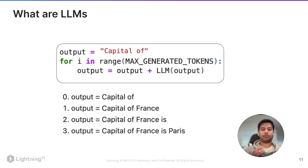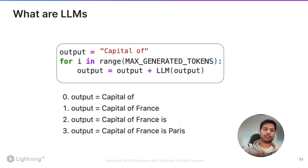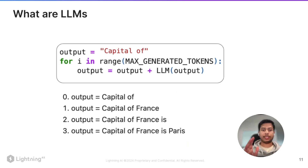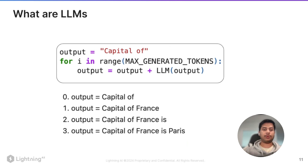Let's understand how the model produces a whole sentence. At step zero, our sentence is 'capital of', and we send this to the language model and run it for a maximum number of generated tokens. The next word generated would be 'France'. We take 'capital of France' and feed it back into the model. The next word is 'is'. At step two, we combine all the words and send it back to the LLM, and finally the LLM predicts 'capital of France is Paris'. This is how it iteratively keeps producing the next word to get a whole sentence.